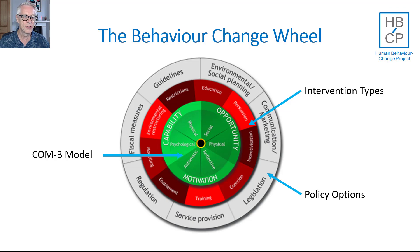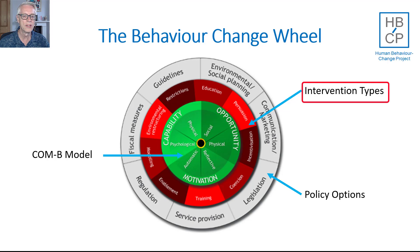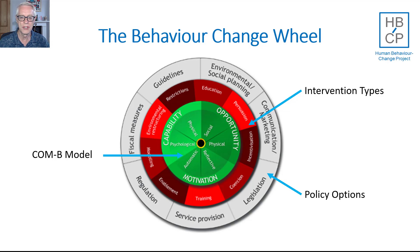Outside of the core and linked to it are nine intervention types — broad types of intervention that can be used to change some aspect of capability, opportunity, or motivation. In that list we have education, persuasion, incentivisation, coercion, training, enablement, modelling, environmental restructuring, and restrictions, in no particular order.